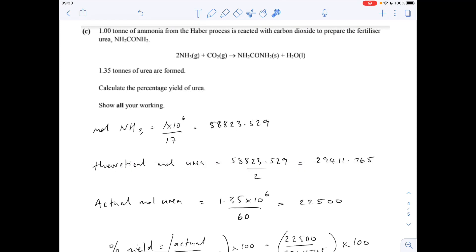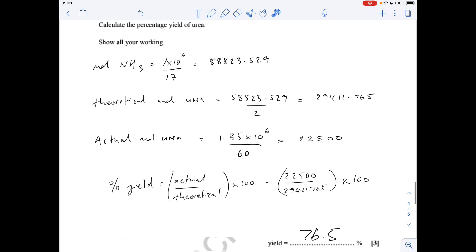The final question is a percentage yield calculation. We've got to work out the percentage yield of urea. We're told that a tonne of ammonia makes 1.35 tonnes of urea. First, we calculate the moles of ammonia. That's a million grams, one tonne is a million grams. Mass over MR gives us the moles of ammonia. Apply the mole ratio, so theoretically we should make half as many moles of urea. Then we work out the actual moles of urea formed, so that's 1.35 times 10 to the 6 grams over the MR of urea. The percentage yield is the actual over the theoretical times 100. You get 76.5%.